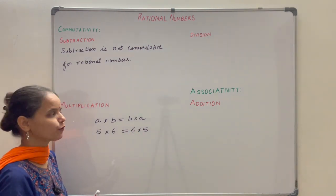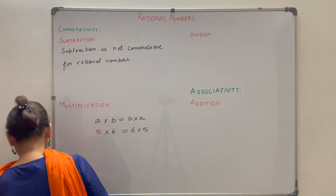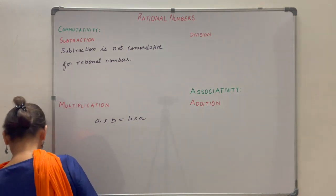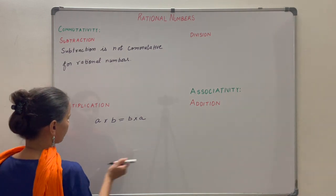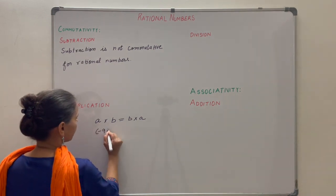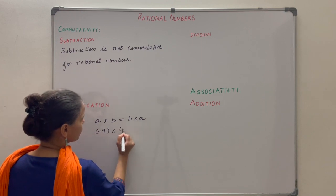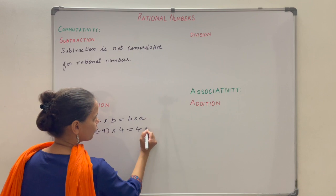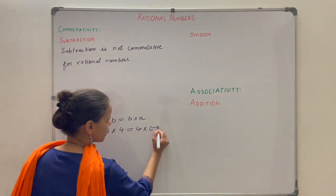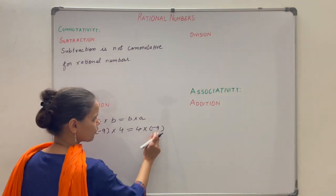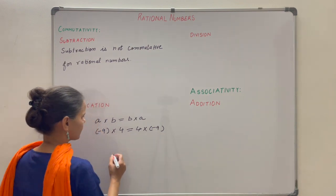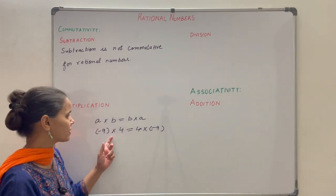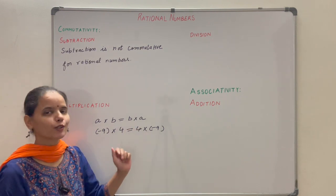Similarly for integers, if you have any two integers A and B then A into B is equal to B into A. For example, with integers minus 9 and 4: minus 9 into 4 gives minus 36, and 4 into minus 9 also gives minus 36. You can try with as many integers as you want and you will always see that A into B is equal to B into A.